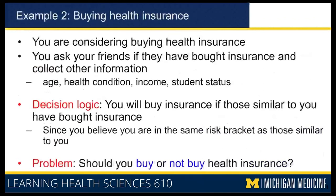Let's take another example. Here, you are in the market to buy health insurance and you ask your friends whether they have bought health insurance and see whether they are similar to you in different aspects. Your logic is you will buy health insurance if those who are similar to you have also bought health insurance, because you think you are in the same risk bracket. You are collecting information about age, health condition, and income levels for your friends and making your judgment based on that. So the decision is whether you should or should not buy health insurance — again, a two-class problem.